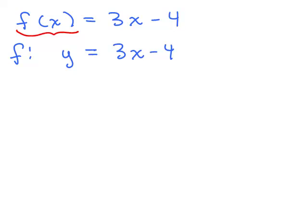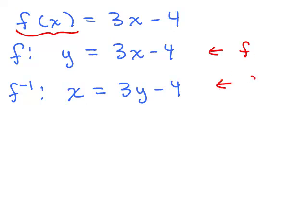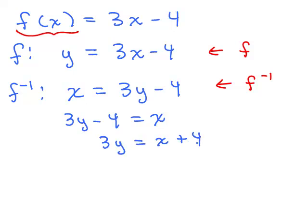These are not the same functions — f is y = 3x − 4, and f inverse starts from x = 3y − 4. Now we need to solve for y. We rewrite as 3y − 4 = x, then add 4 to both sides to get 3y = x + 4, then divide everything by 3, giving y = (x + 4)/3.